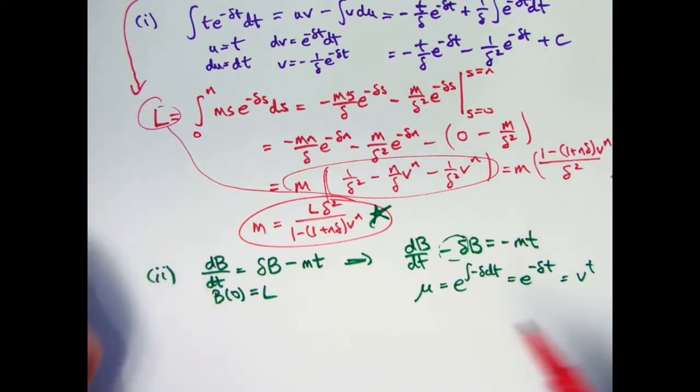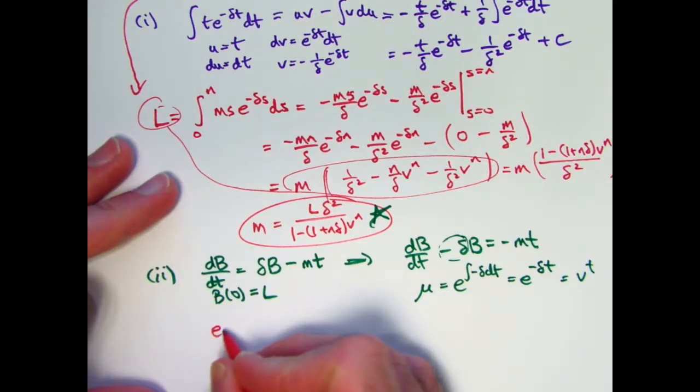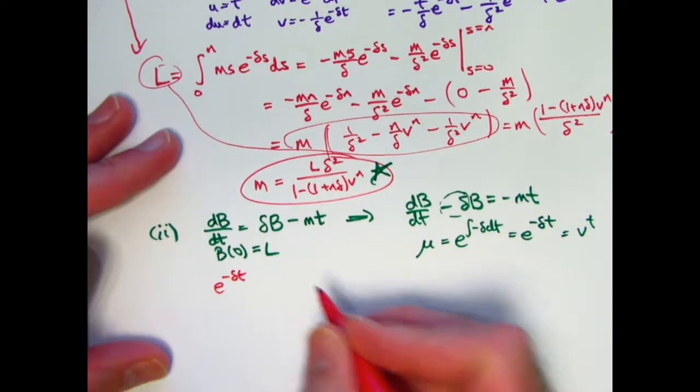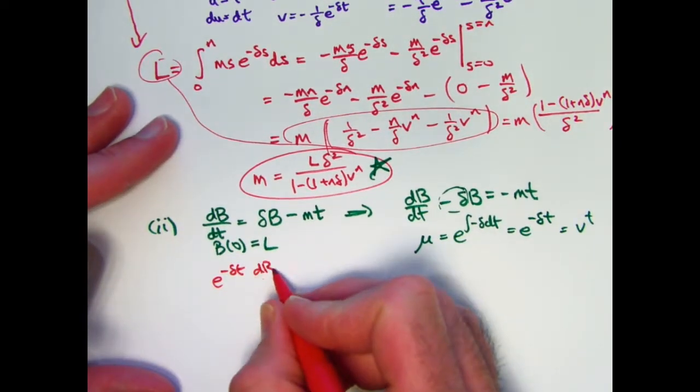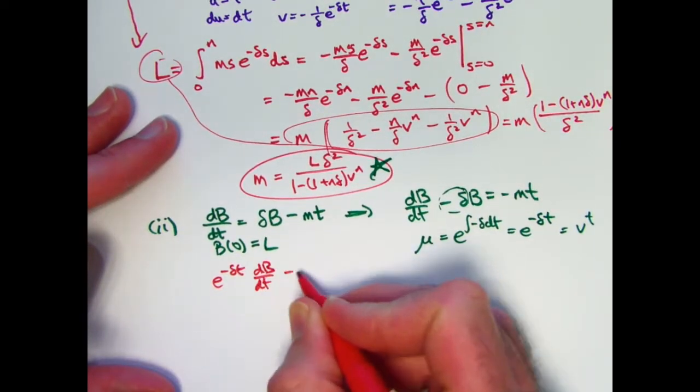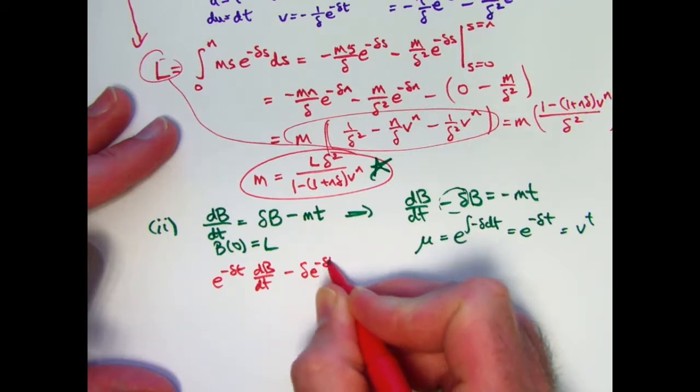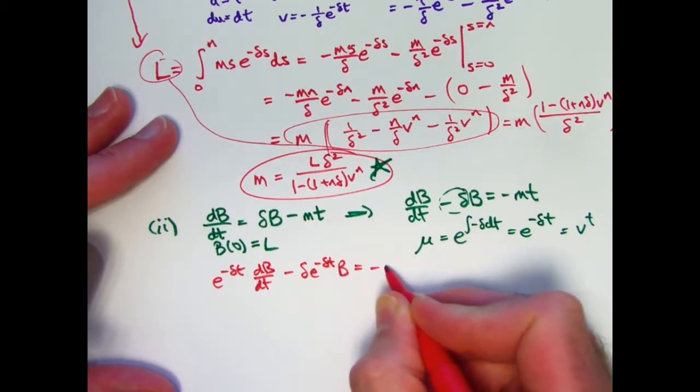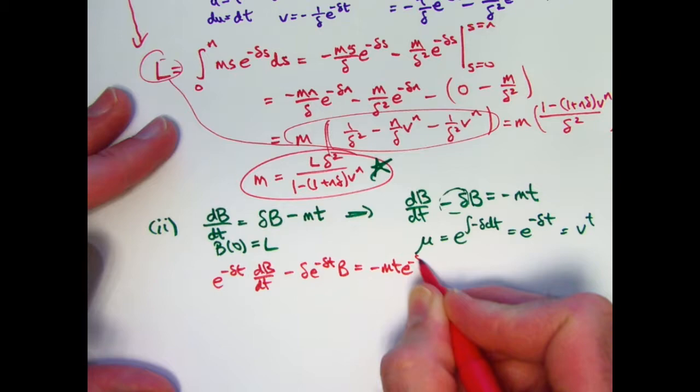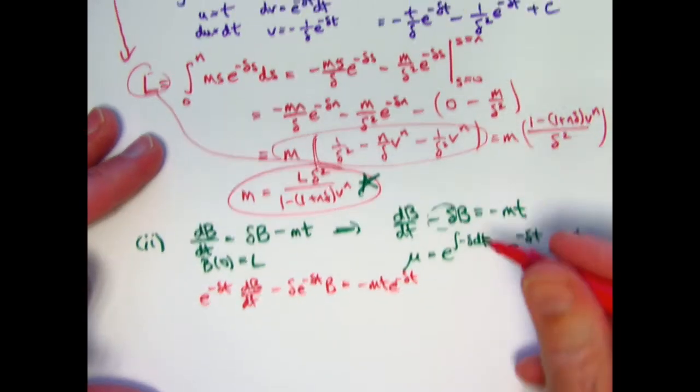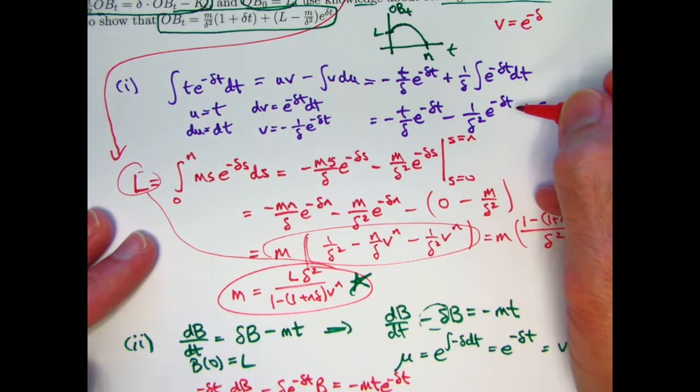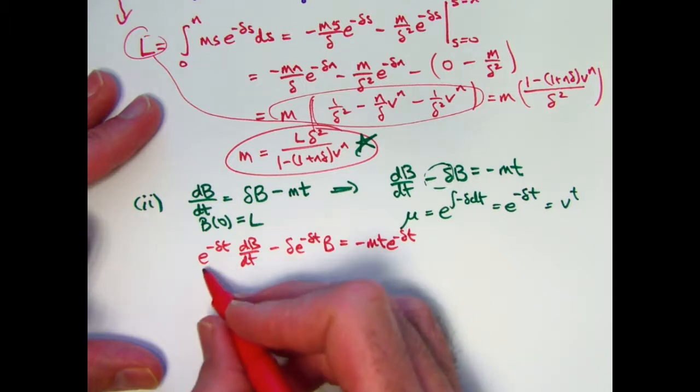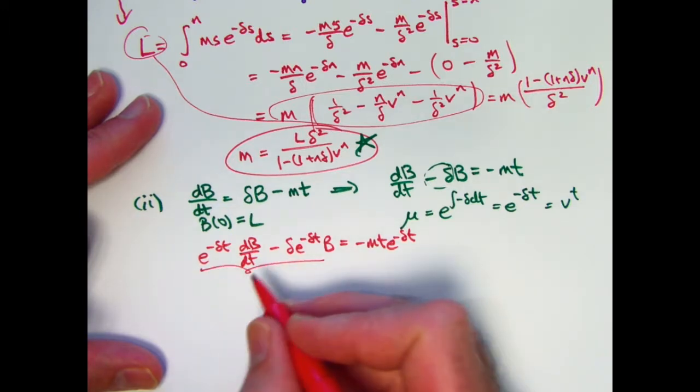It's a factor, an integrating factor. I now multiply both sides by that. I get E to the negative delta T dB dt minus delta E to the negative delta T times B equals negative MT E to the negative delta T. We will need the integral we found up here in purple once again.